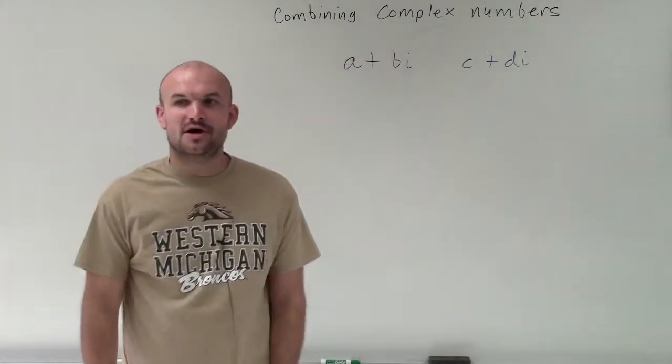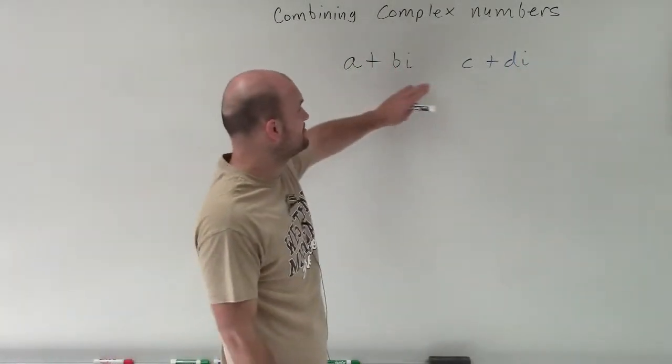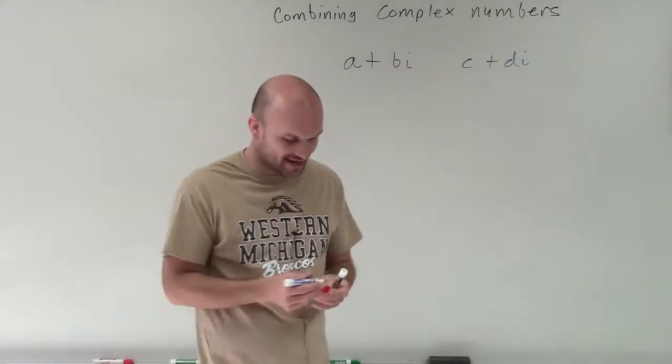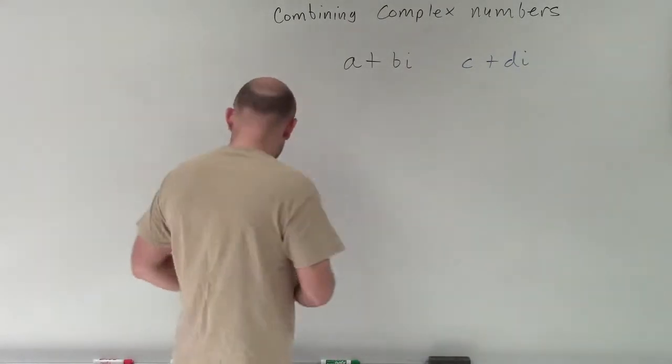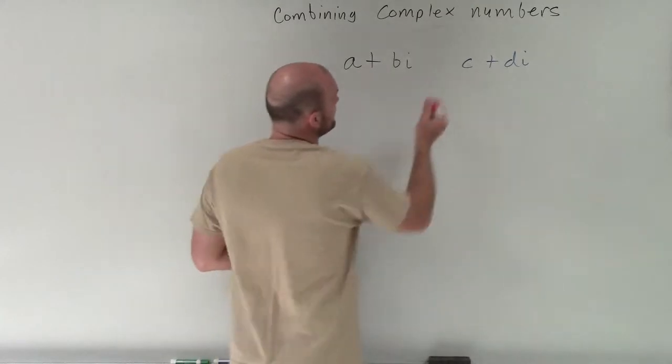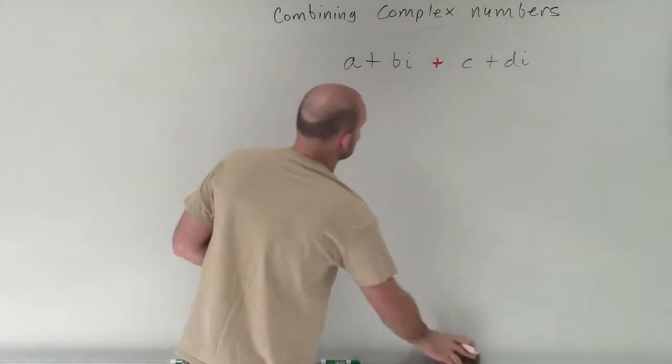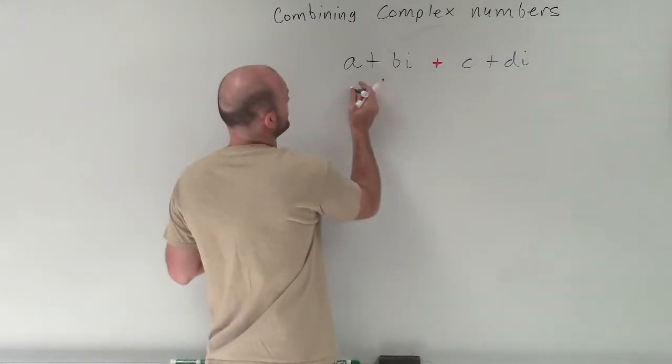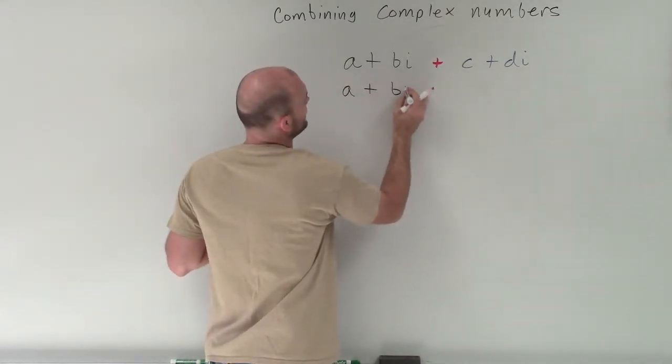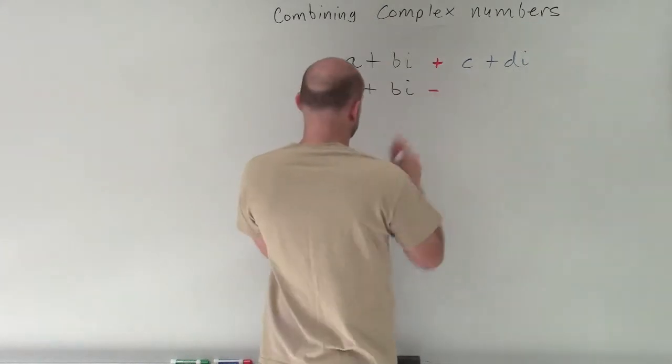So we have two complex numbers, one a plus bi and the other c plus di. Now, if we're going to combine them, that means I'm either going to add these complex numbers or subtract them. It doesn't really matter. We're going to apply a lot of the same methods to each one of these.